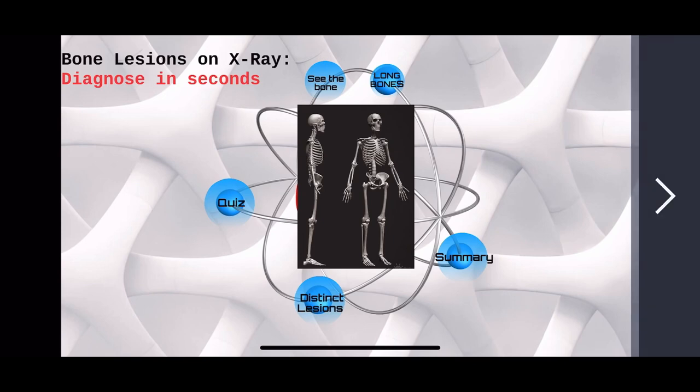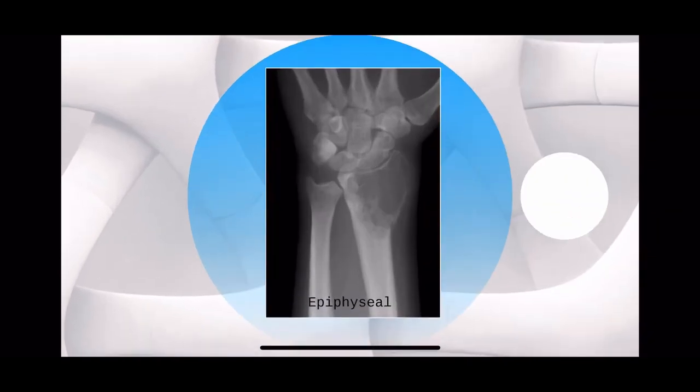If you want to check how much you have learned, recapitulate a bit and then take this quiz. When you see this X-ray, the first word should be: epiphyseal. First rule out — this is benign, obviously not going into the soft tissues. It is epiphyseal, so it has to be GCT or chondroblastoma. Because it looks aggressive, it is GCT.